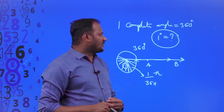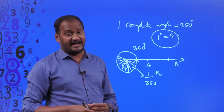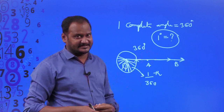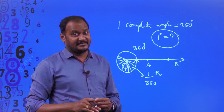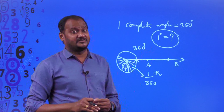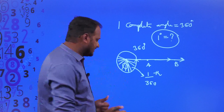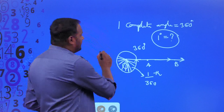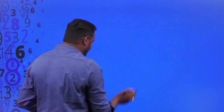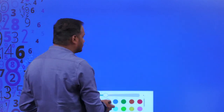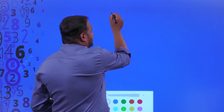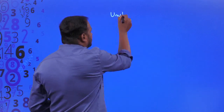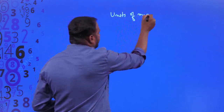Now let us understand the different units of measurement for angles apart from degrees. There are three systems of units of measurement of an angle. The first is the sexagesimal system, introduced by the British, which is why it is also called the British system. The second is the centesimal system, introduced by the French, so it is also called the French system. The third system is the circular or radian measure.